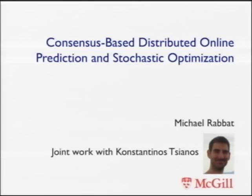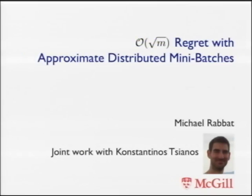This is joint work with my former PhD student Konstantino Sianos. I'm going to tell you about consensus-based distributed online prediction and stochastic optimization. An alternate title could be: achieving order square root of M regret with approximate distributed mini-batches.